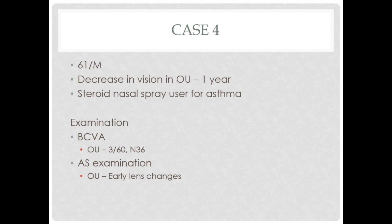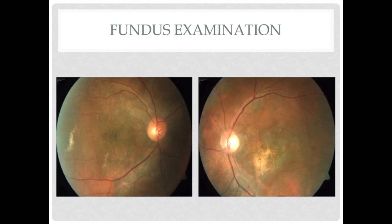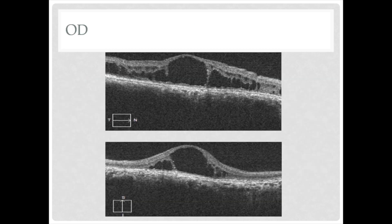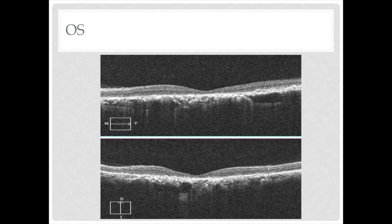For this patient, intravitreal anti-VEGF was given and the patient is being followed up. Case 4: a 61-year-old male came with decrease in vision in both eyes for one year, with history of steroid usage via nasal spray for asthma for 10 years. Best corrected visual acuity was 3/60 in both eyes. Fundus showed multiple RPE alterations and atrophic patches at the macula. OCT of the right eye showed cystoid macular edema with diffuse cystic cavities, loss of ellipsoid zone, irregular RPE, and RPE atrophy. The left eye showed foveal thinning, loss of ellipsoid zone, RPE irregularity, and a few flattened PEDs — all indicating a case of chronic CSCR.